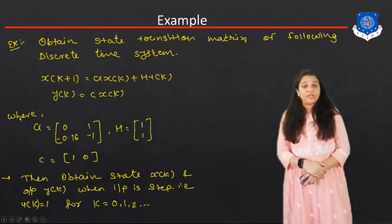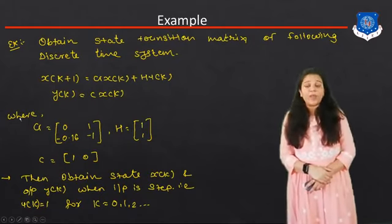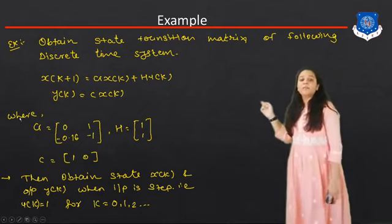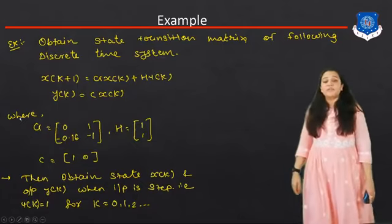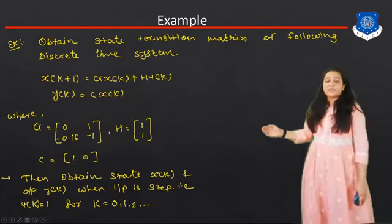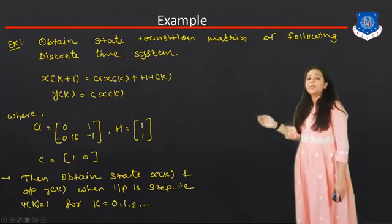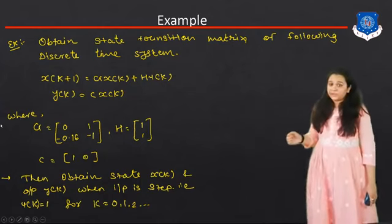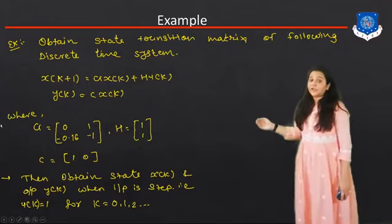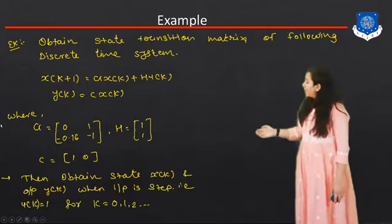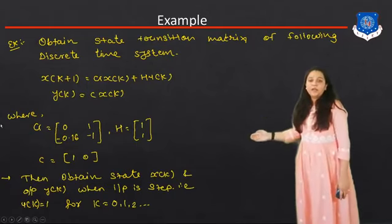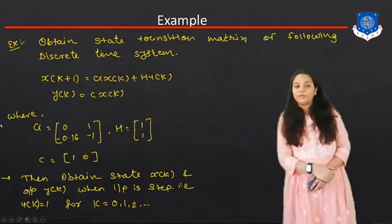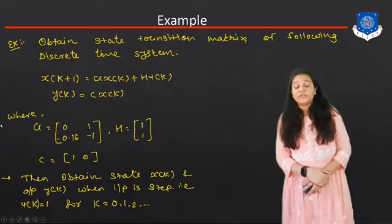For example, obtain the State Transition Matrix of the following discrete time system. The equation is: X(K+1) = G·X(K) + H·U(K), and Y(K) = C·X(K). Where G = [0, 1; -0.16, -1], H = [1; 1], C = [1, 0]. We also need to obtain the state X(K) and output Y(K), where the input is a unit step: U(K) = 1 for K = 0, 1, 2, ... up to infinity.